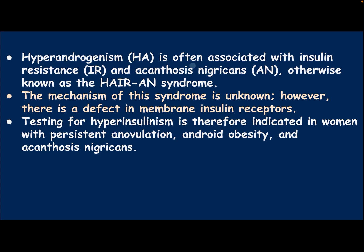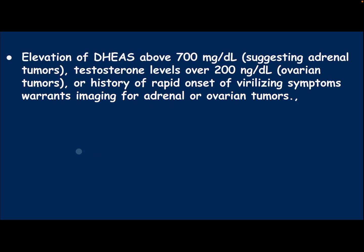Hyperandrogenism is often associated with insulin resistance and acanthosis nigricans, otherwise known as HAIR-AN syndrome. The mechanism of this syndrome is unknown; however, there is a defect in the membrane insulin receptor. Testing for hyperinsulinemia is therefore indicated in women with persistent anovulation, android obesity, and acanthosis nigricans. Elevation of DHEA above 700 suggesting adrenal tumor, testosterone level over 200 suggesting ovarian tumor, or a history of rapid onset of virilizing symptoms, all warrant imaging for adrenal or ovarian tumors.